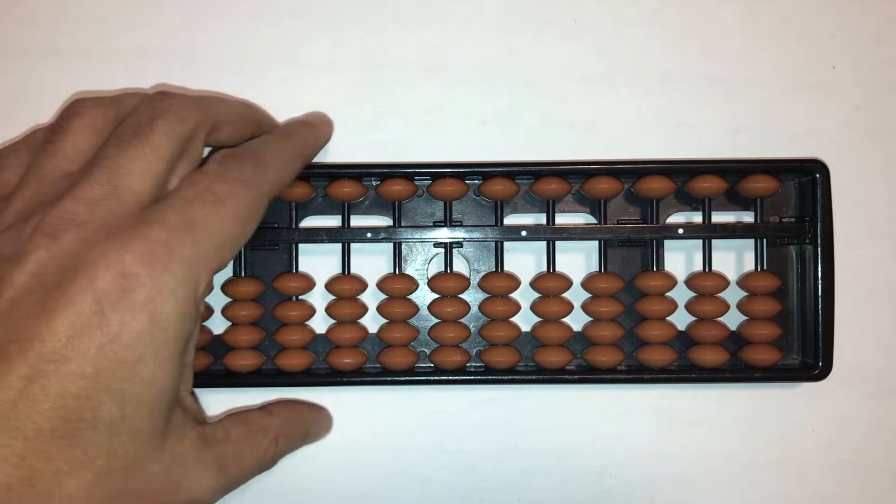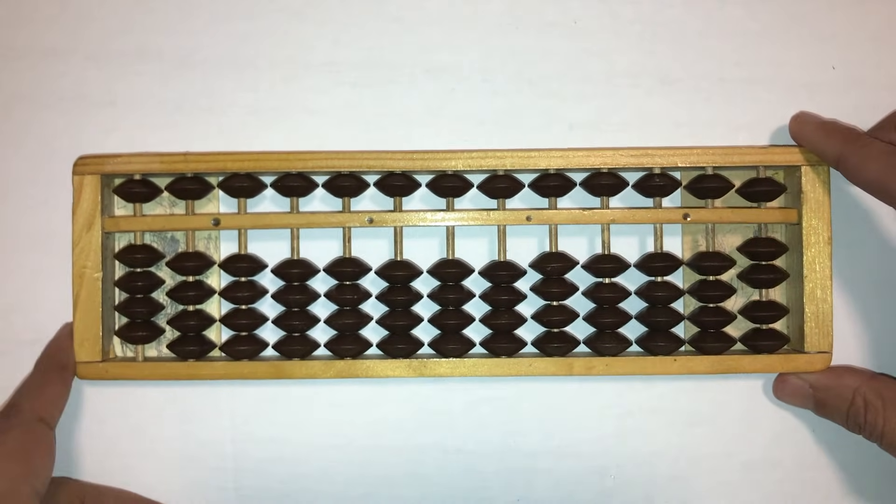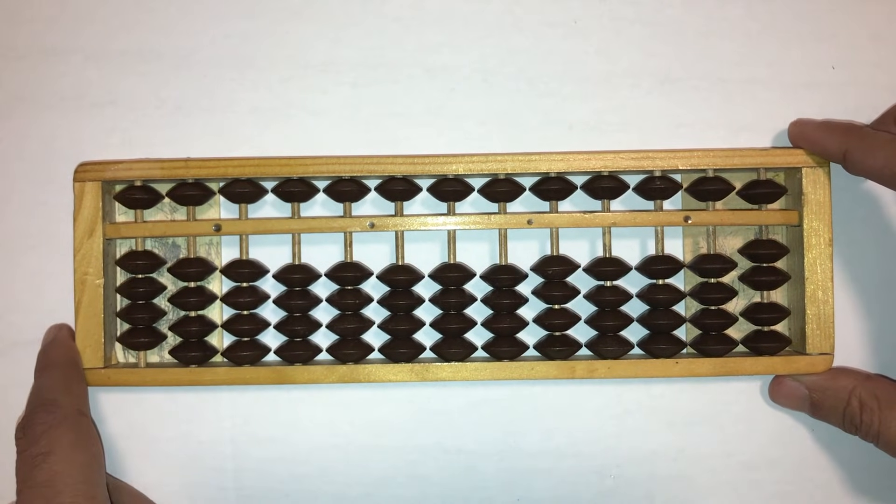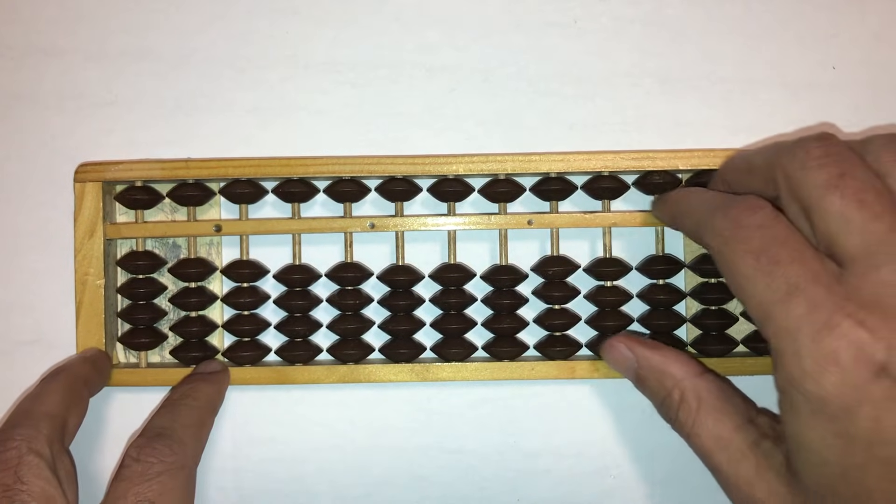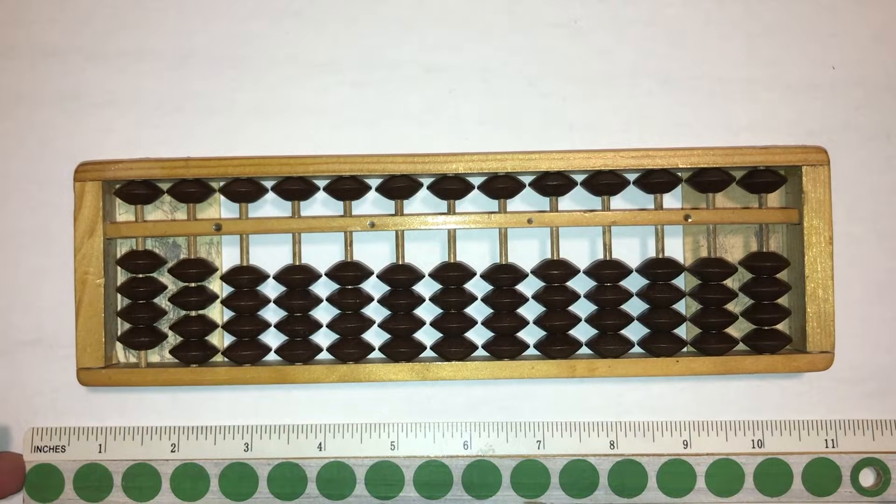Now, instead of a plastic frame, these abacus also come with a wooden frame like what you see here. These are a little sturdier, but this one is also 10 inches in length and it's got 13 columns, and you use your fingers to clear out this abacus.